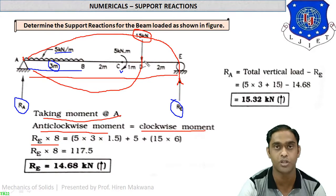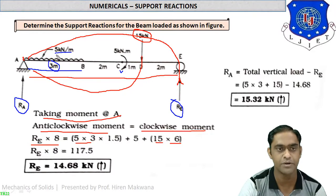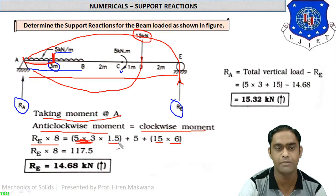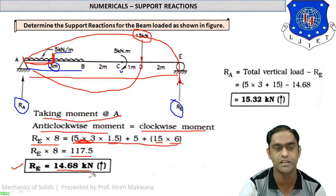So the clockwise moment from the point load is 15 × 6. The UDL (5 × 3 = 15 kN) acts at its midpoint, which is 1.5 m from the start of the UDL. The moment unit for the applied couple is kN·m, so the 5 kN·m moment is added to the clockwise side directly without multiplying by a distance. Solving the equation gives RE = 117.5 ÷ 8 = 14.68 kN.